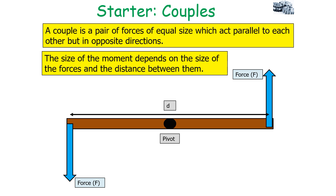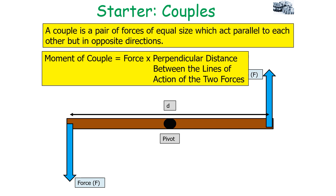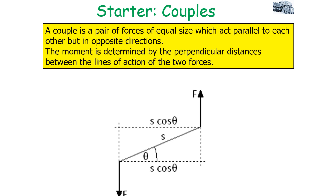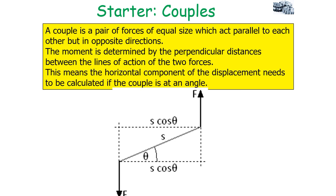The size of the moment depends on the size of the forces and the distance between them. The moment of a couple is equal to the force multiplied by the perpendicular distance between the lines of action of the two forces, so the moment equals force times d. If a couple is acting at an angle, as shown in this diagram, the horizontal component of the perpendicular distance needs to be calculated.